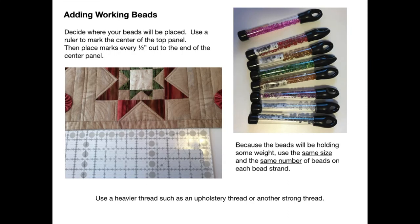When you're ready to add your working beads, you're going to decide where they will be placed. I use a ruler and mark the center of the top panel, then mark out at every half inch with little red marks, and the same thing on the left side. Because the beads will be holding some weight, it's important to use the same size and the same number of beads on each bead strand. Also use a heavier thread, such as an upholstery thread or another strong thread.